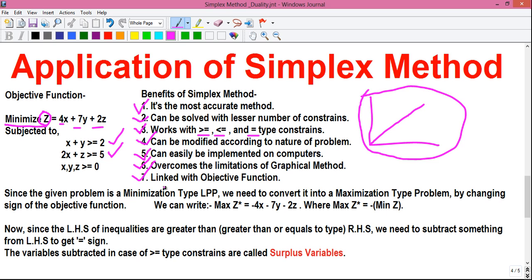Benefit number 7. The simplex method is linked with the objective function. If we consider these constraints as equals to, then the first constraint will become X plus Y equals to 2. Similarly, if you convert all the constraints into equations, then you can think them as a system of linear equations.